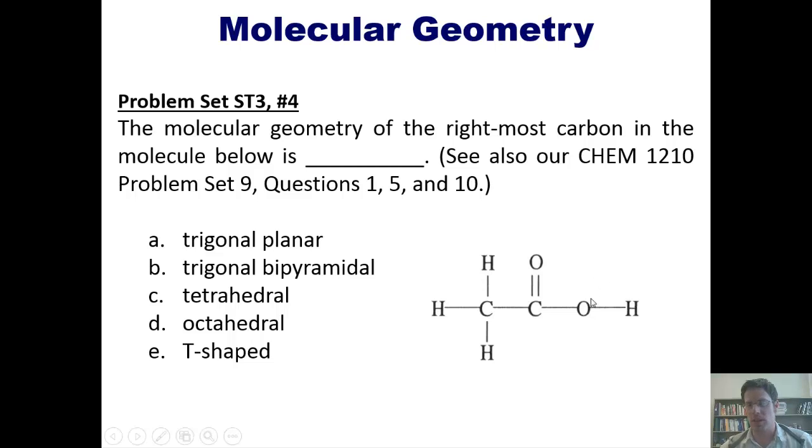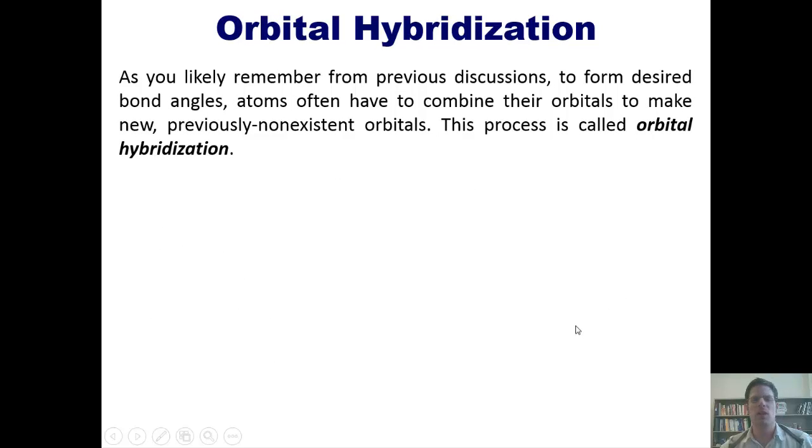That takes us to a new subject, that of orbital hybridization. Now, as you likely remember from previous discussions, to form desired bond angles, atoms often have to combine their orbitals to make new, previously non-existent orbitals. This process is called orbital hybridization.